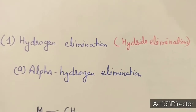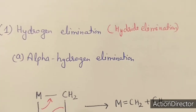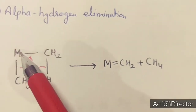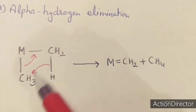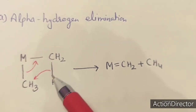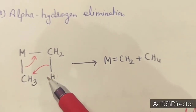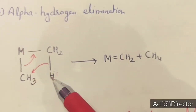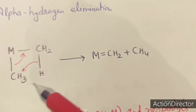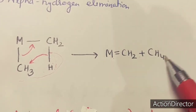Pathway number one of decomposition is hydride elimination, which may be alpha or beta hydride elimination. If an alpha hydrogen is present — for example, in this reaction we can see this is the metal center with two ligands forming a metal alkyl complex — this is the alpha carbon and this is the alpha hydrogen. Due to the presence of this alpha hydrogen, the hydride at the alpha position will eliminate and form M=CH₂ and CH₄. So this alpha hydride elimination produces M=CH₂ and CH₄.